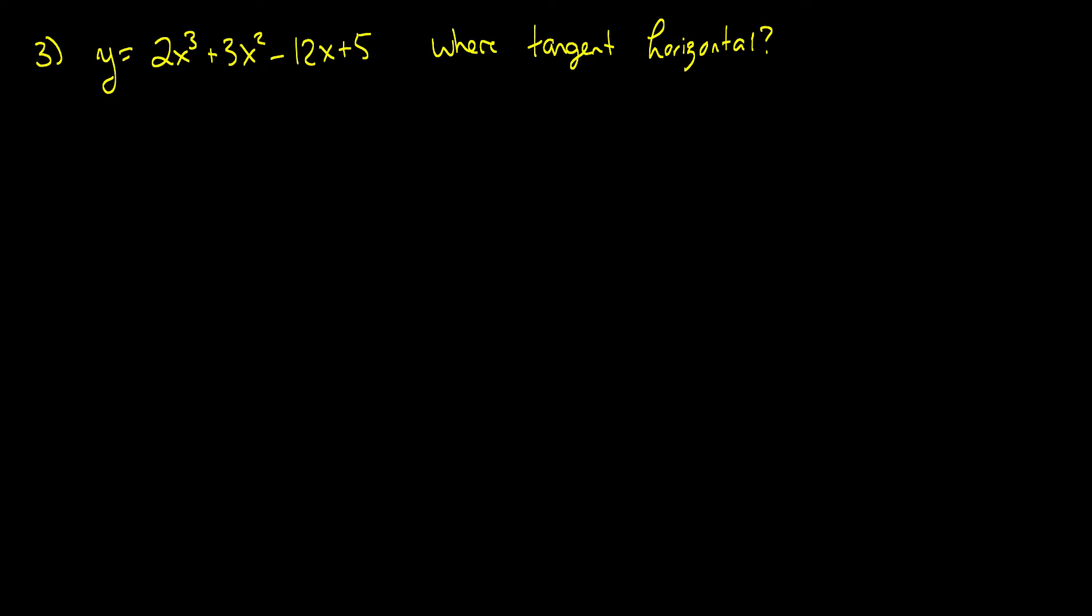So what does this mean? Well, the tangent is the derivative, and horizontal means that the slope is 0. So we want to know where y prime is equal to 0. So here we go.